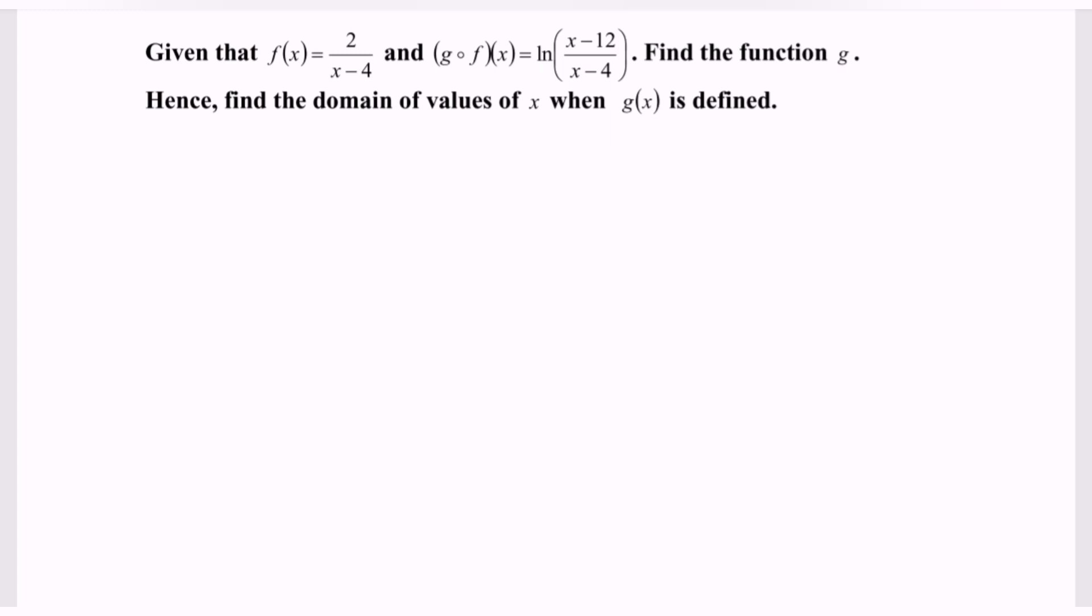Given that the function f(x) equals 2 over x minus 4, and the composite function g composed with f equals ln of (x minus 12) over (x minus 4), find the function g. Our focus will be looking for g(x). Hence, find the domain of values of x when g(x) is defined.